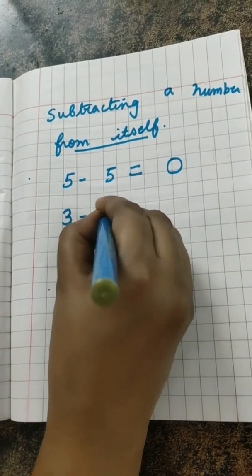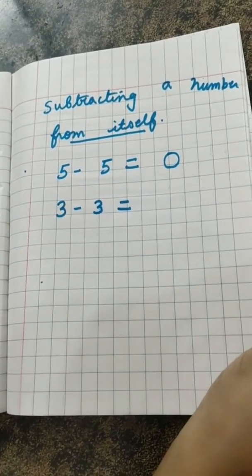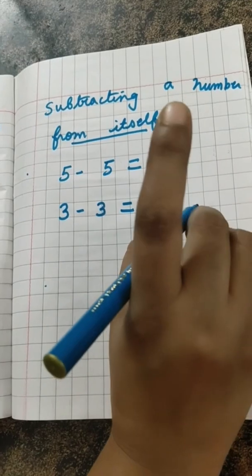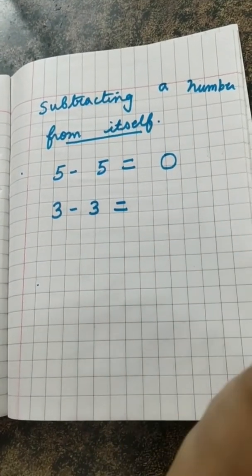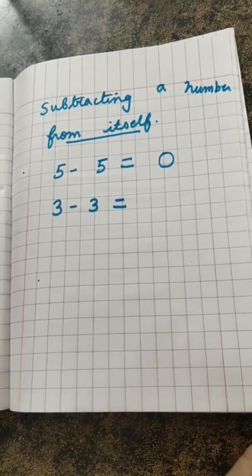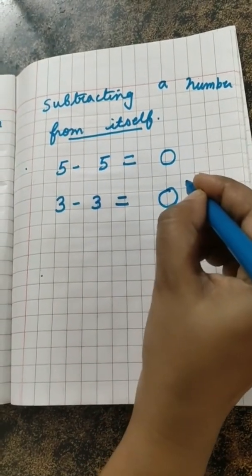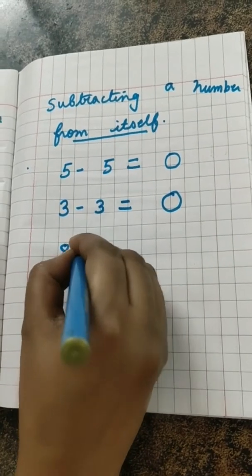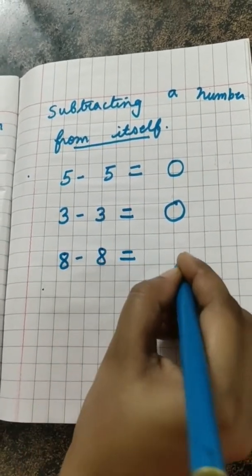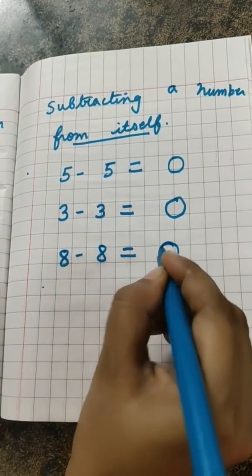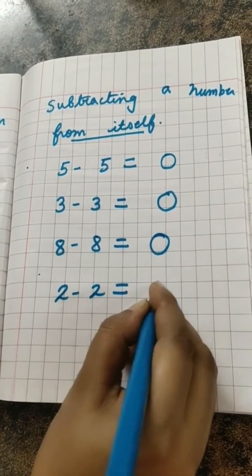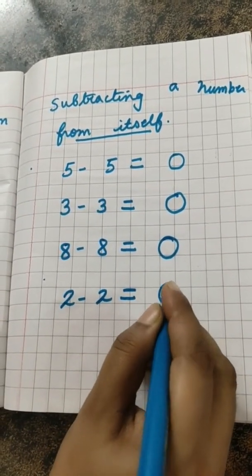If you subtract a number from itself, then what we will get? Nothing. Nothing means what? Zero. Very good. Now this time 3 minus 3, what will be the answer? One of you are saying nothing, yes, and one of you are saying zero. Both of you are correct. Zero means nothing. Very good. This time 8 minus 8, what will be the answer? Yes, zero. Two minus 2, what will be the answer? Zero. Very good.